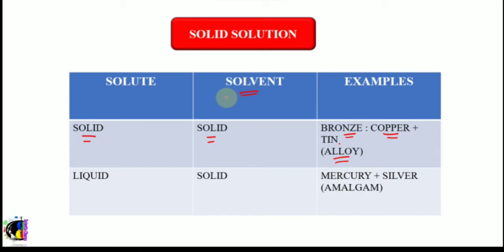In a solution, the solvent will be in higher quantity by weight and the solute will be in lesser amount. The physical state of the solute and solvent characterizes the final product. So the properties of bronze depend on the physical state of the solute and solvent — here both are solid, so the properties of bronze reflect that. If the physical state is changed, the properties of the final product will be completely different.